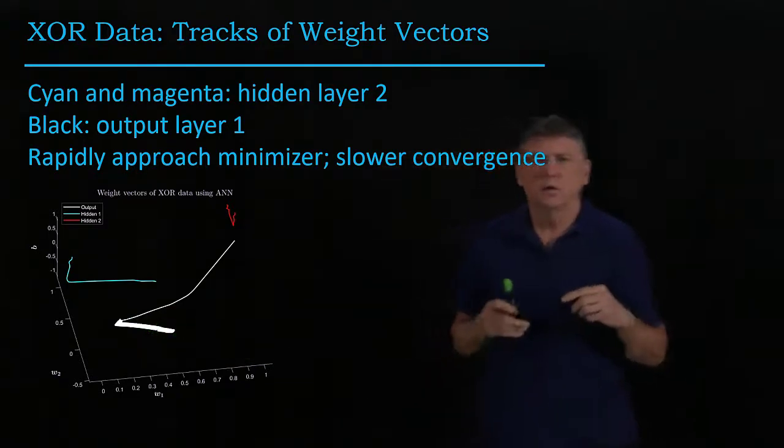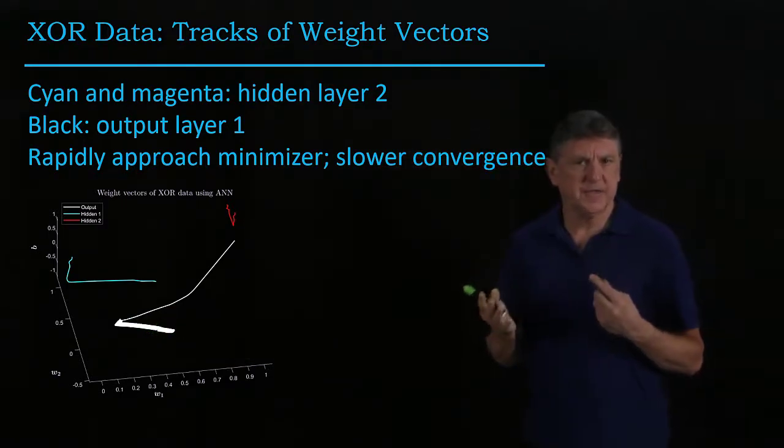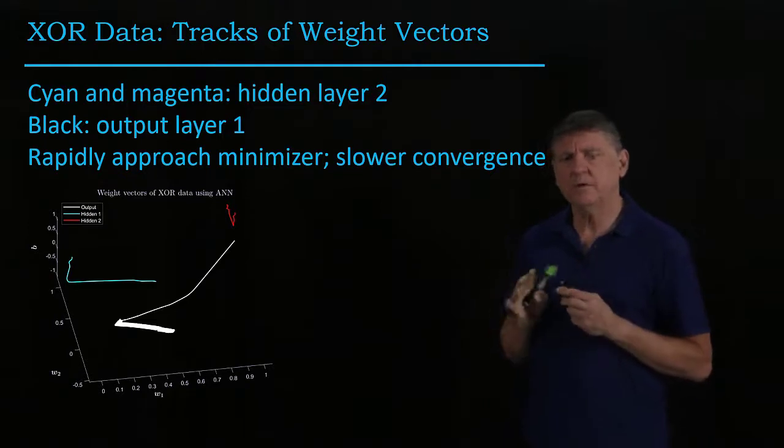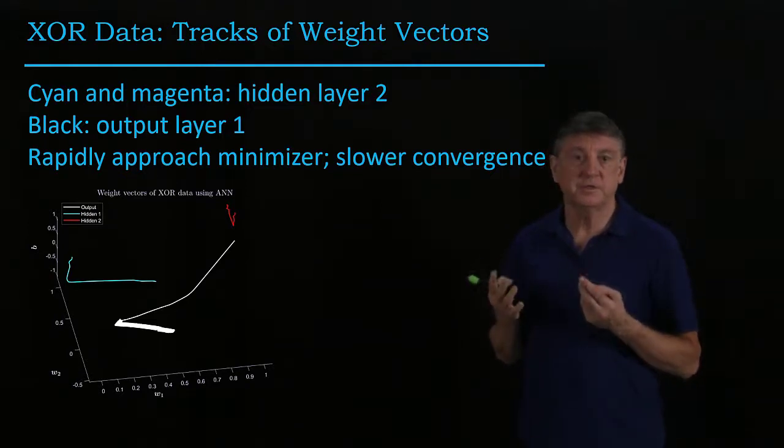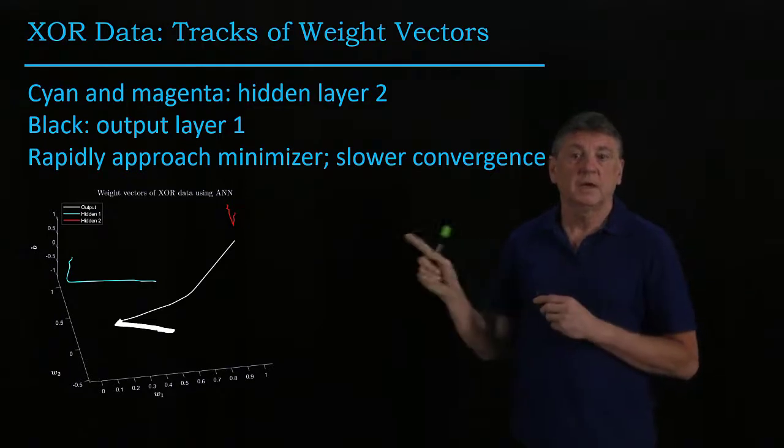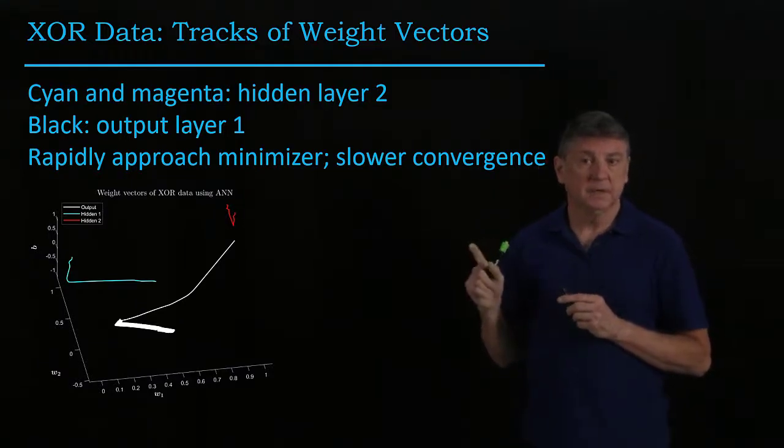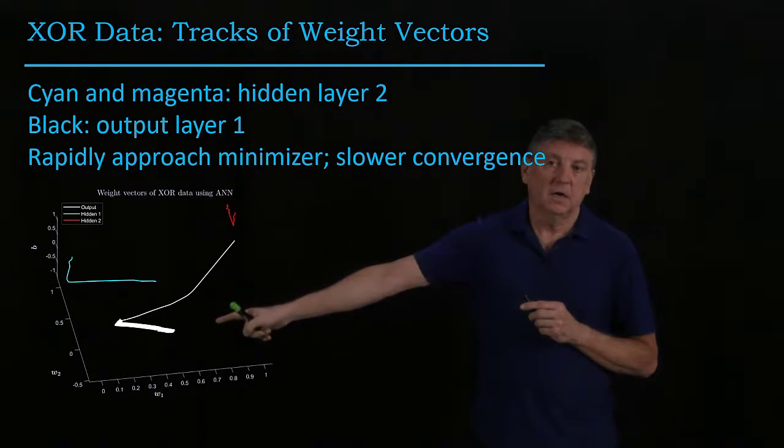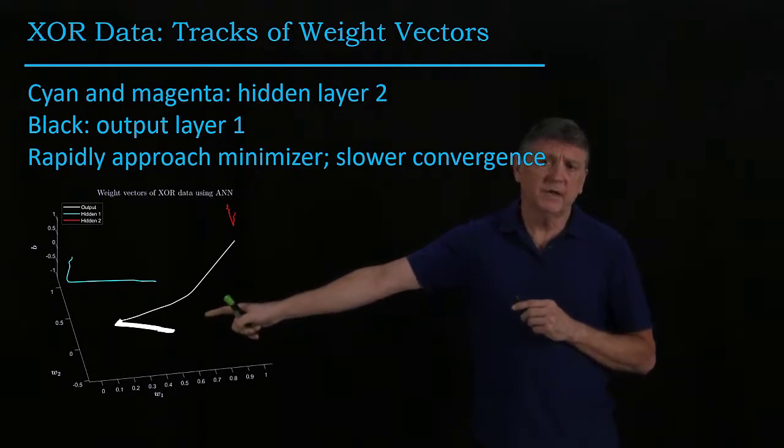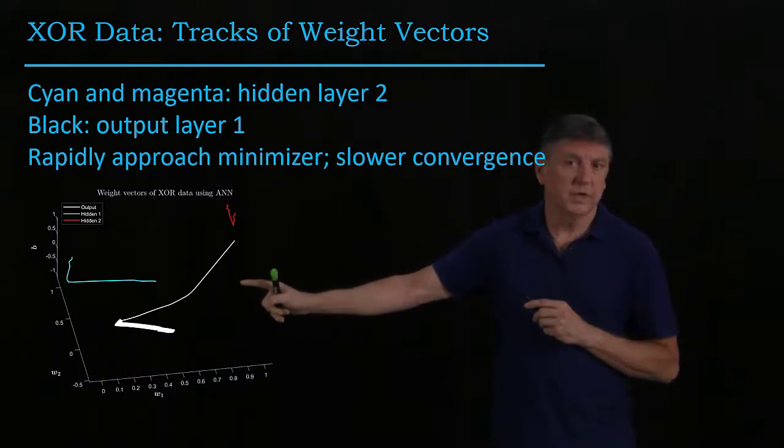And we can now start to understand that there are different ways that we could approach this steepest ascent problem. Here we can see that the hidden layer is learning rapidly, and that the learning rate for the output layer is not working quite as well.